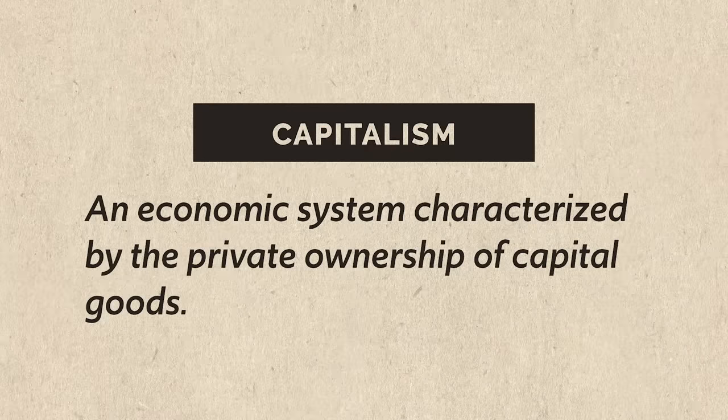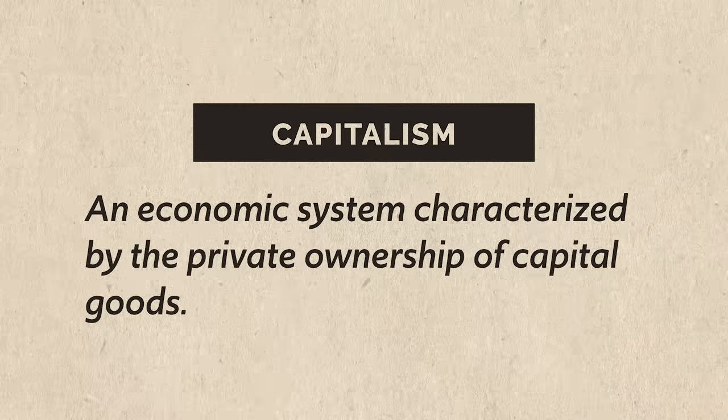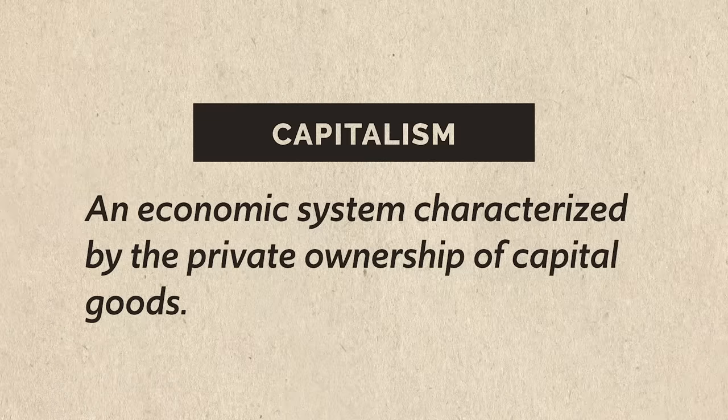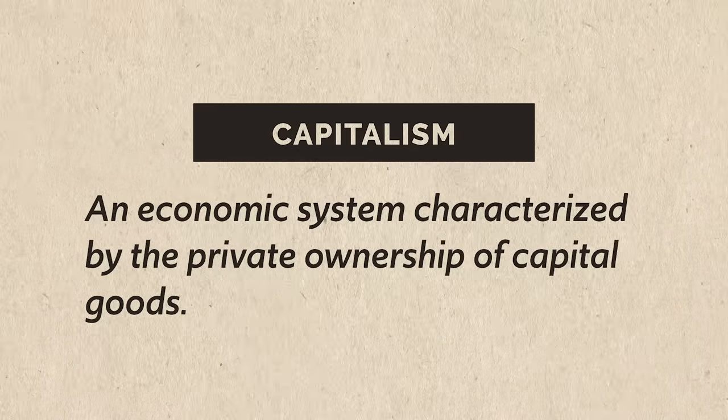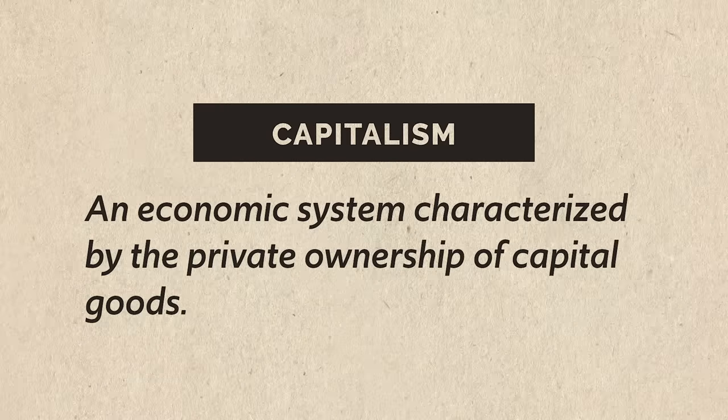First, why are these two powers at odds? Well, the first thing to mention is that they had competing systems of economics. The United States was a capitalist economy. Capitalism is an economic system characterized by the private ownership of capital goods — goods that are used to make other goods, like a machine in a factory. In a capitalist economy those capital goods are owned by individuals, which is to say privately, and those individuals make economic decisions that are in their own self-interest.